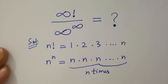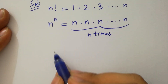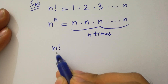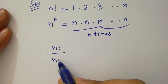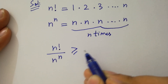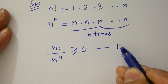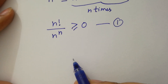Then for any positive n, we have n factorial over n to the power n will be greater than or equal to 0. Let's call this the first equation.